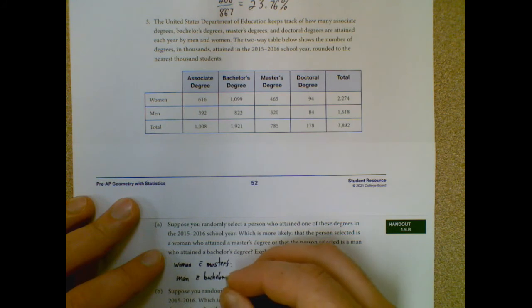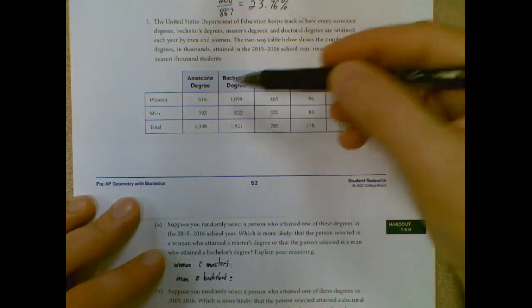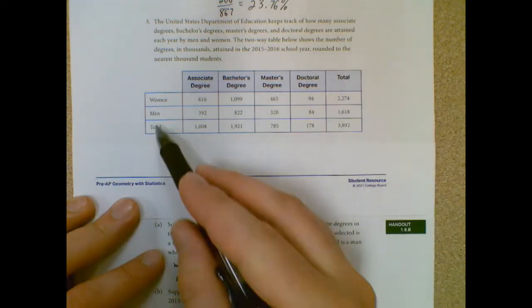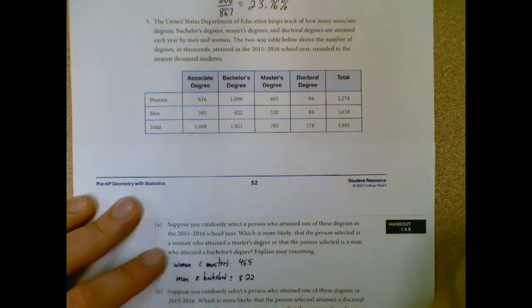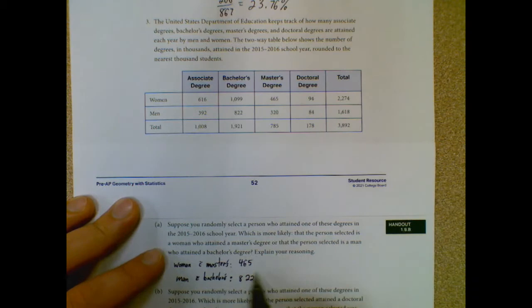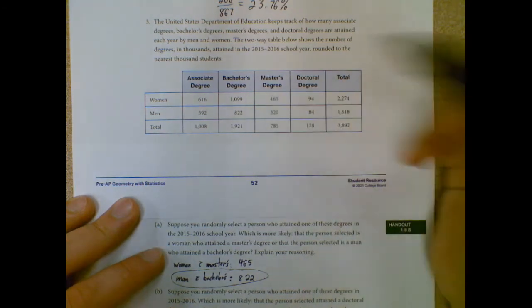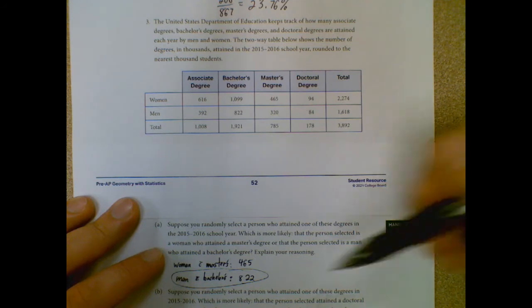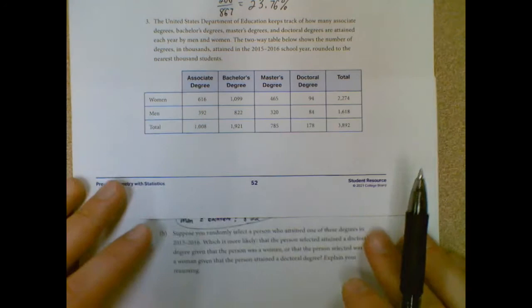So we have a woman with a master's degree - how many women got master's degrees? That'd be 465. And how many men got bachelor's degrees? That'd be 822. So which one would be more likely to pick? It should be the higher one. So it should be a man with a bachelor's degree, which is not really shocking because they give out a lot more bachelor's degrees in general than master's degrees. So that one should be more likely just because there are more of them to choose from.